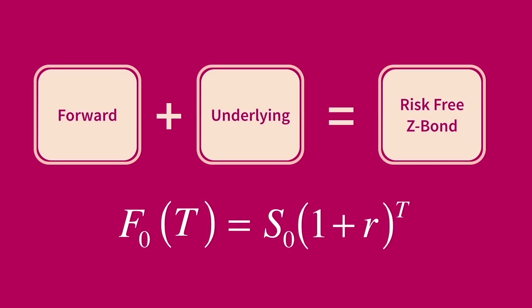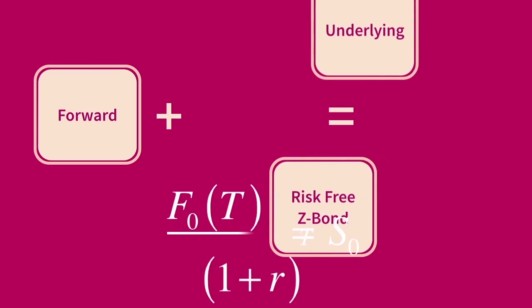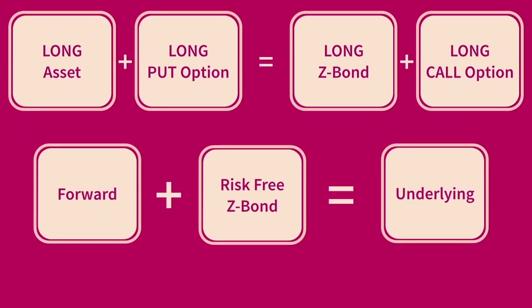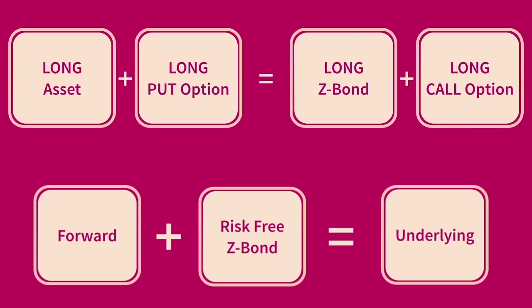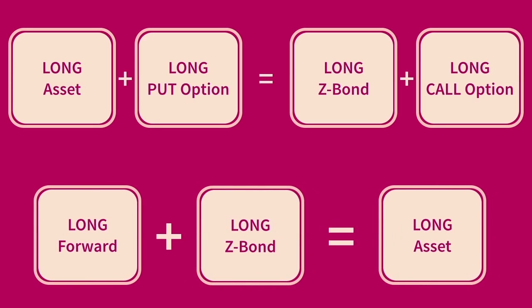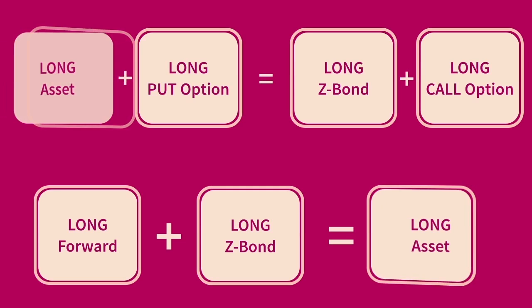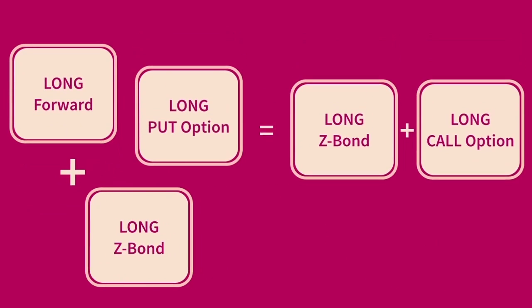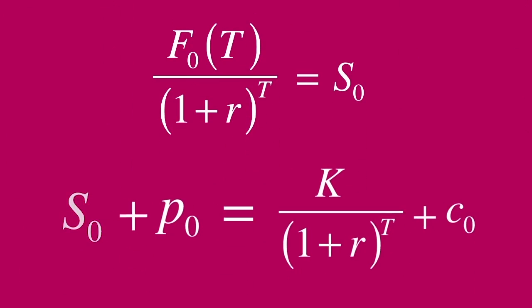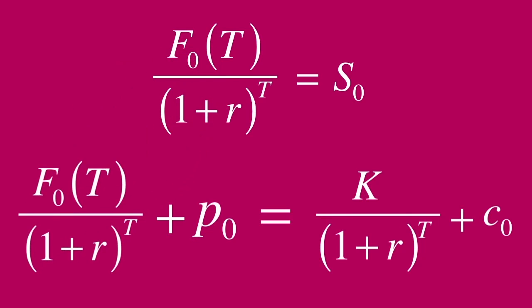Through the principle of replication, we can move the elements of this relationship around to find that a combination of a forward plus a risk-free bond should equate to the payoff structure of the underlying asset. We take the component assets used to build the put-call parity relationship and swap out the asset for a forward contract and a bond to yield the exact same portfolio value. Put-call forward parity takes these two relationships and puts them together, rearranging the forward formula to isolate the spot price and swapping it into the parity formula.